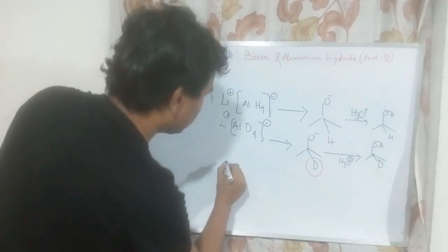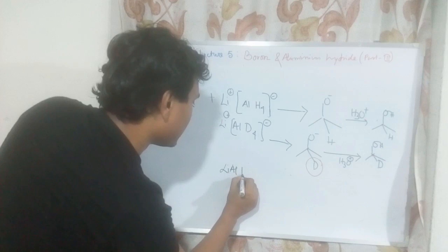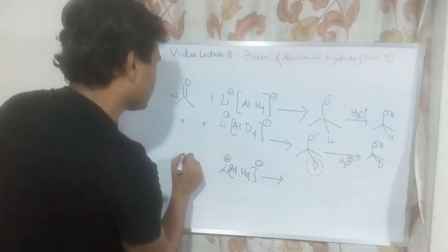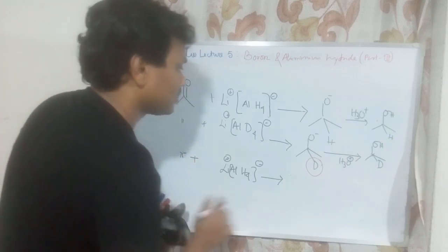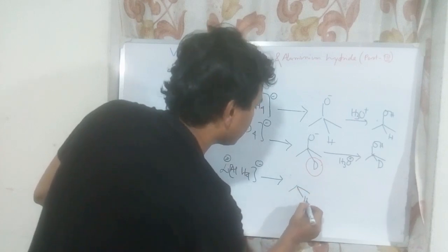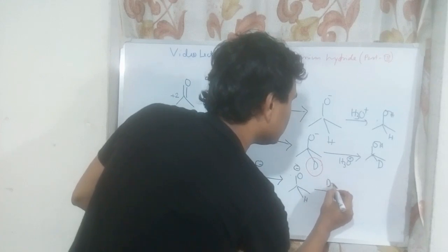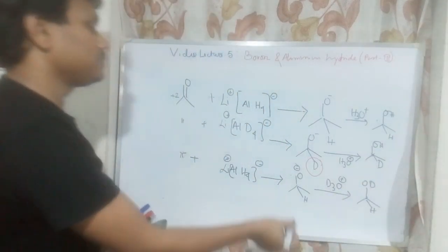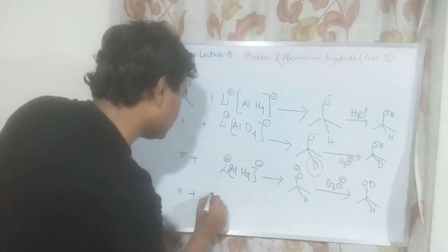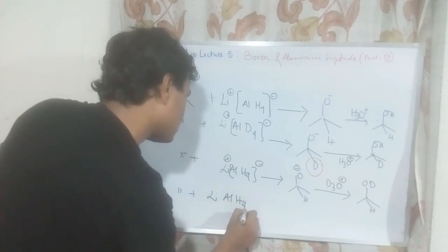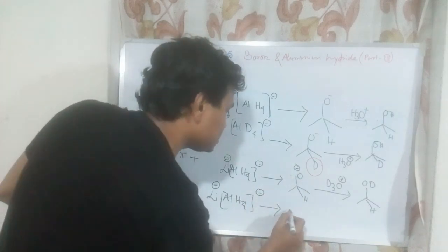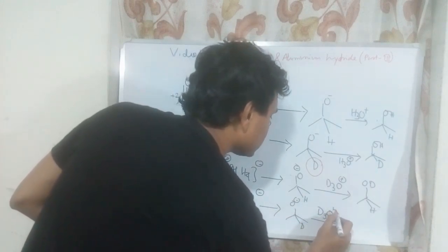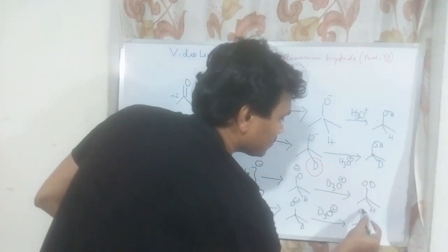Let us take another combination: lithium aluminium hydride (LiAlH4) reacting with the ketone produces the alkoxide, and workup with D3O⁺ results in deuterium being attached at the oxygen. Similarly, if we use LiAlD4 with D3O⁺ workup, there will be deuterium attachment both at the carbon centre initially and also from D3O⁺ at the oxygen.